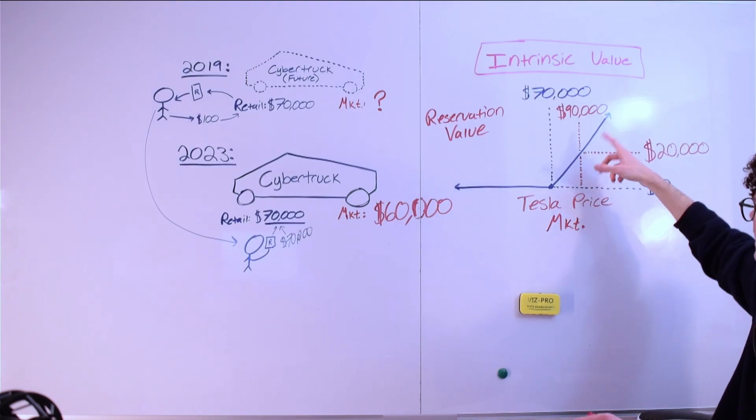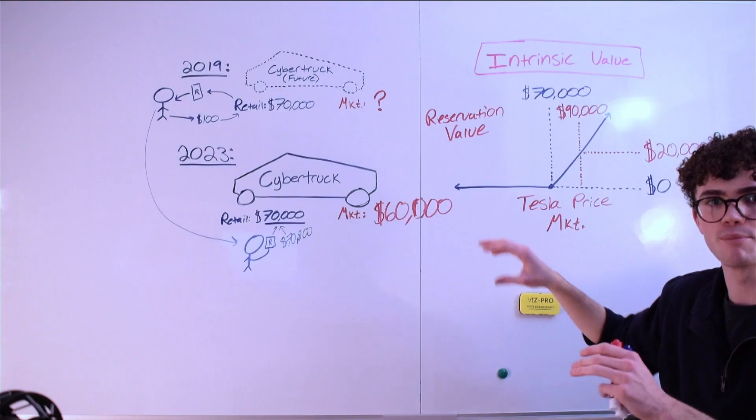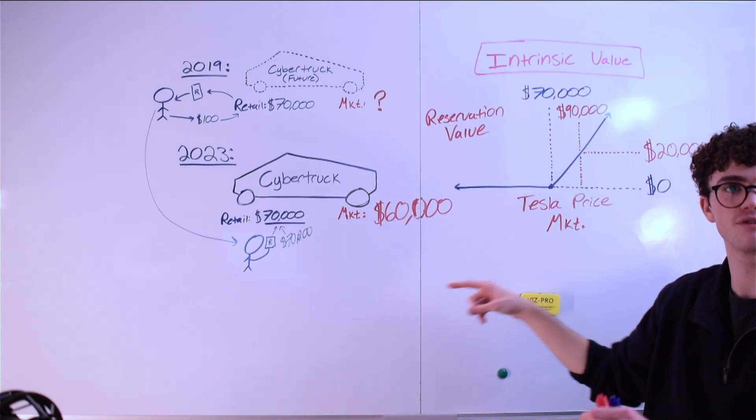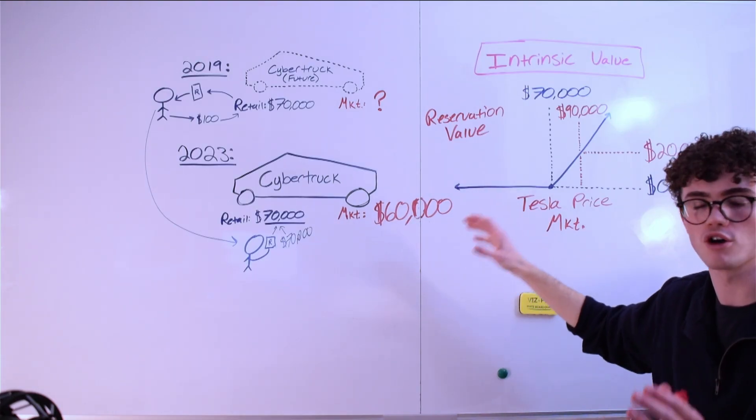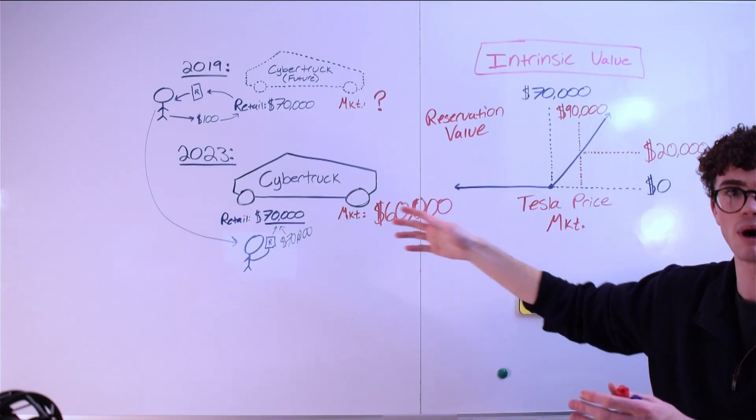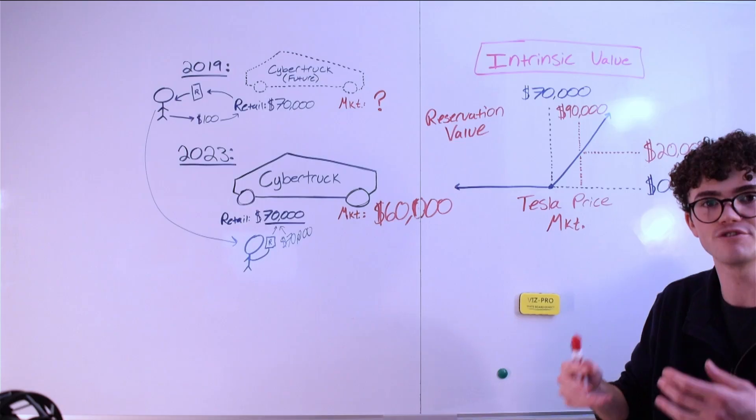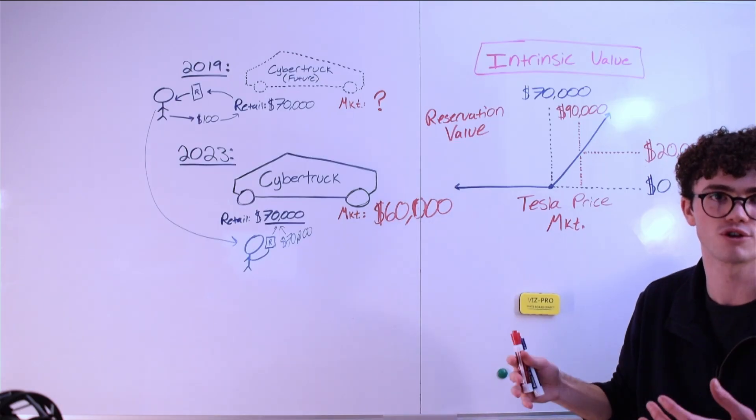So when the market price of the Tesla is $90,000, my reservation is worth $20,000 because of that difference. If the market value of the Cybertruck is anything less than the retail price of the Cybertruck, my reservation is completely worthless. If the market price of the car on Carvana were $100,000, my reservation to buy it at $70,000 would be worth $30,000 because exercising it gives me a car for $70,000 that I can go turn around and sell for $100,000.